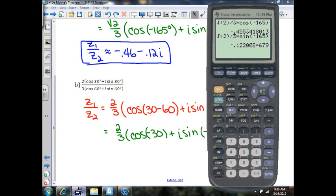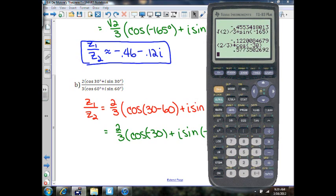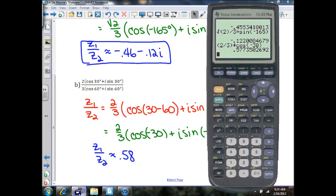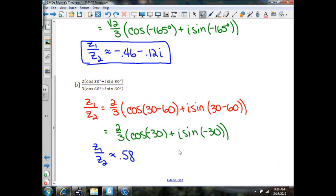In your calculator, about 0.58, so Z1 divided by Z2. And then 2 thirds times the sine of negative 30 would be about negative 0.33.